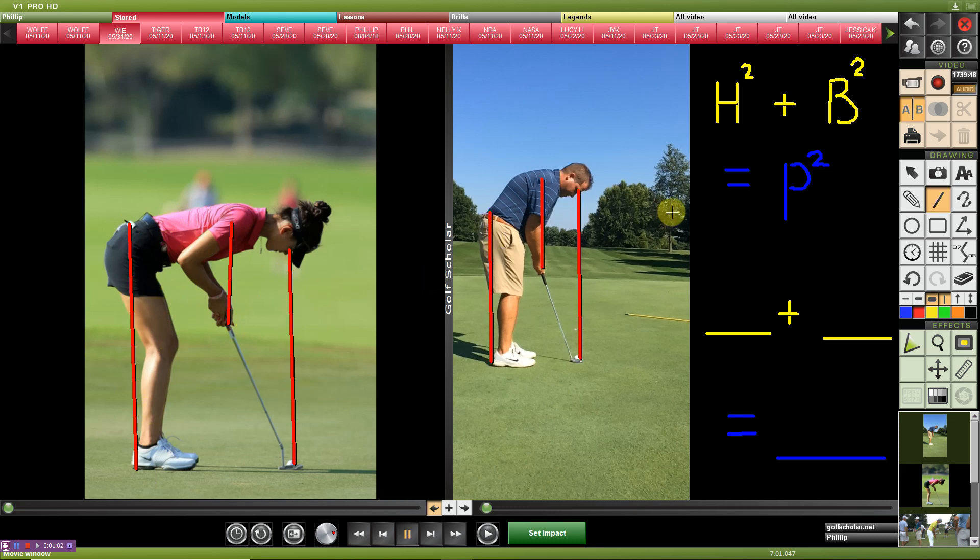Okay, so next what we're going to do is establish a hand distance. So when we look at the formula here at the top right, it's h squared plus b squared is going to give us p squared. So h squared is going to be the hand distance to the ground. So from their lead hand, the crease in that to the ground, you're going to measure that in a straight line down in inches.